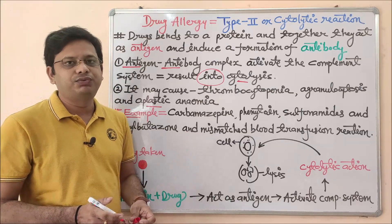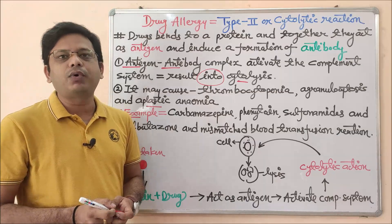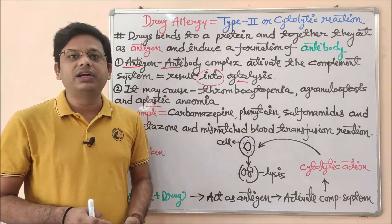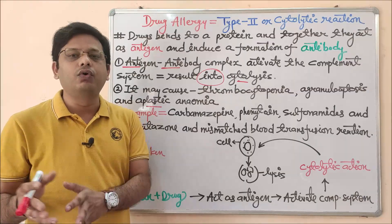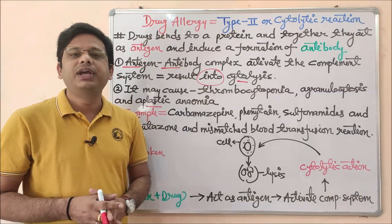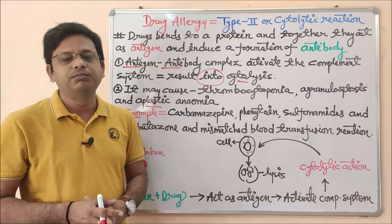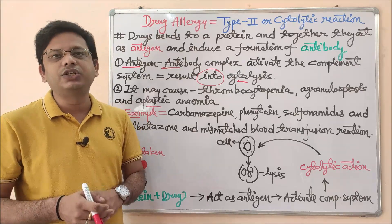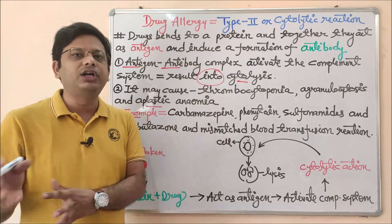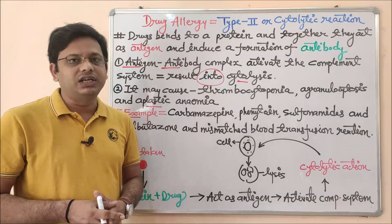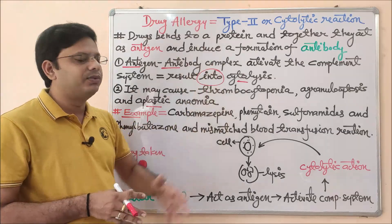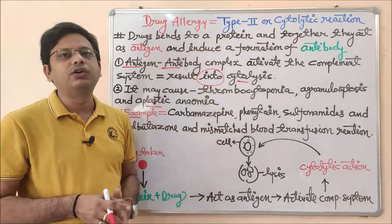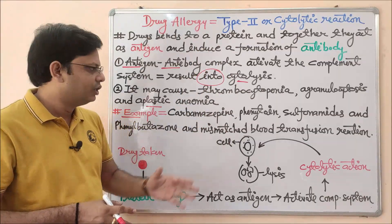These are carbamazepine, phenytoin, sulfonamides, and in most cases phenylbutazone. Also, with a mismatch in blood transfusion — whenever a blood group donor transfers blood into an incompatible recipient — there can be problems due to blood incompatibility, and a Type 2 cytolytic reaction may take place.